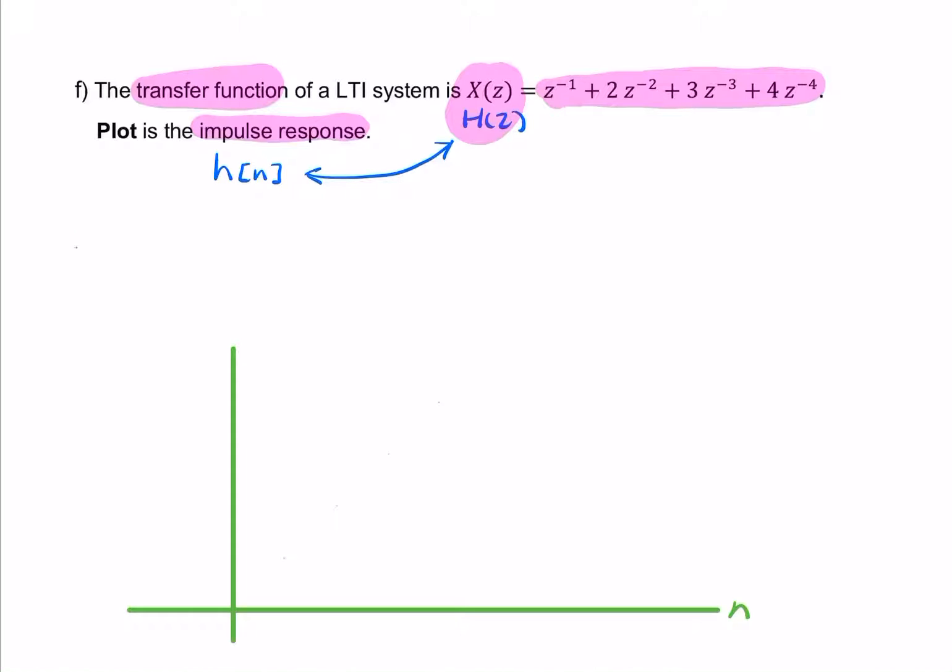So remember, h of z is simply the summation from n equals 0 to infinity, x of n times z to the power minus n. And in this case, it's given to us here.